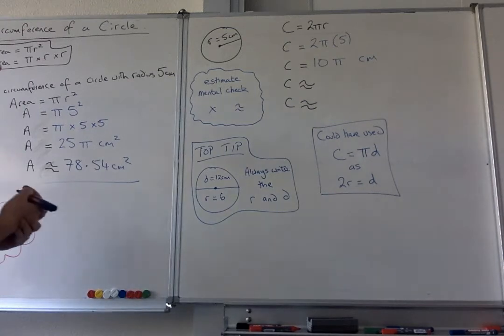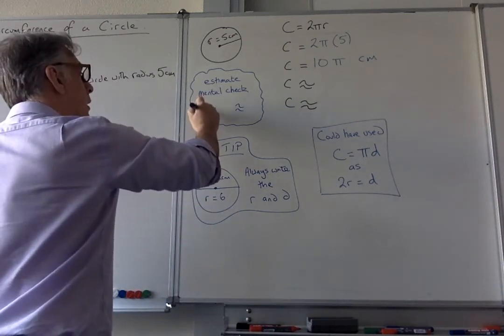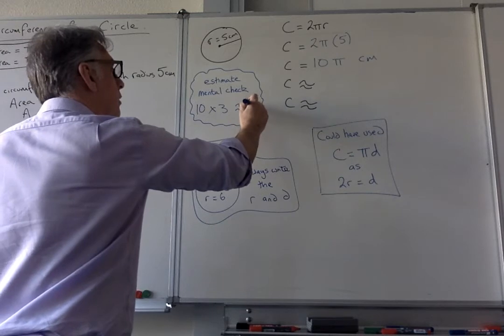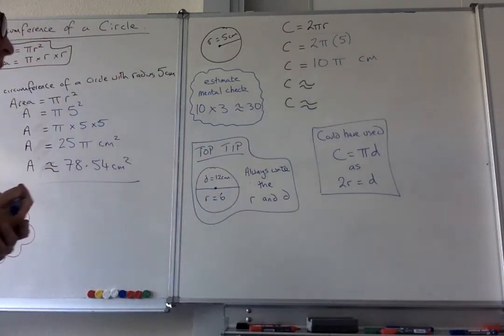Now we're going to do a mental check again. π is roughly 3, so we're going to do 10 times 3, which is 30, so my answer should be around 30.